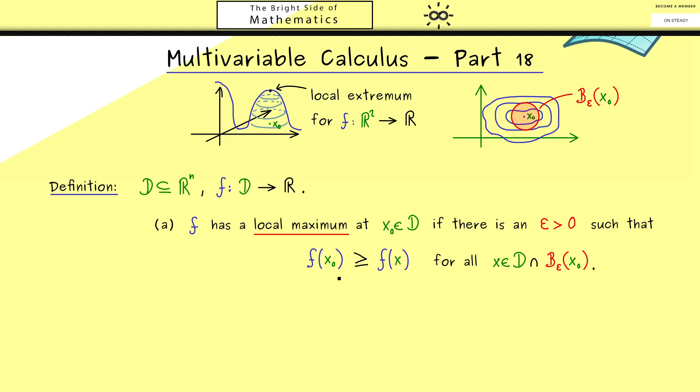Hence you see this defines the term local maximum. However, here you should note that we don't have the strict inequality here. Hence also for a constant function we would have local maxima. If you want to exclude that, we will say that we have an isolated local maximum. So the definition should be exactly the same; we just add the word isolated in front of local maximum. And then you see that we want to have the strict inequality here, which results that we only have one local maximum in this neighborhood. This definition here is more restrictive than the other one.